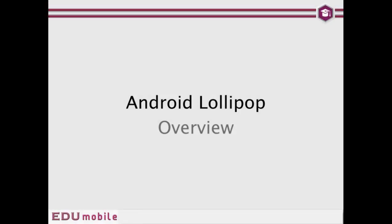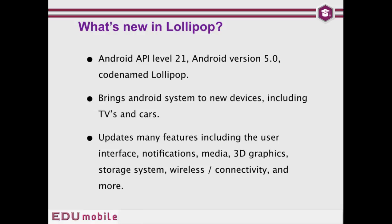Hi, this is Rick for EDU Mobile and welcome to this overview discussion about Android Lollipop. First of all, what is Lollipop and what is new in Lollipop? Lollipop is Android API level 21, also known as Android version 5.0, and it's code named Lollipop.